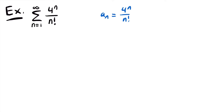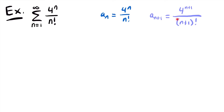Next we identify a sub n plus 1 by replacing n with n plus 1. That gives us 4 to the power of n plus 1 in the numerator, and in the denominator we replace n with n plus 1, giving us n plus 1 factorial. Be sure to write the parentheses so the factorial affects the whole quantity n plus 1, not just the 1.